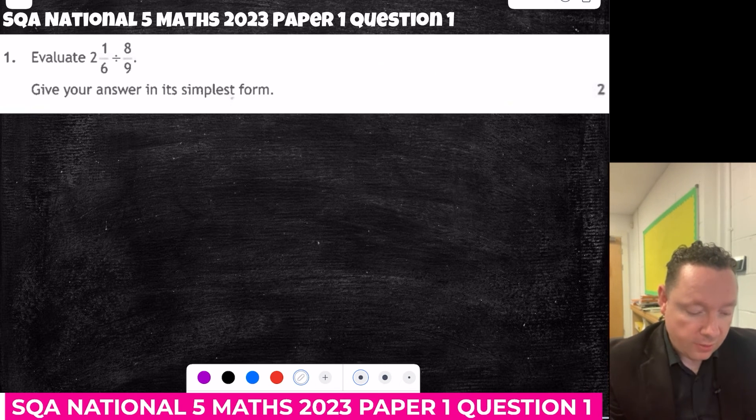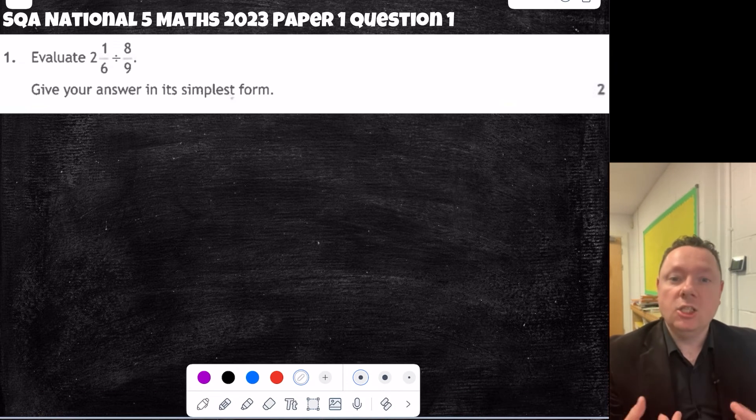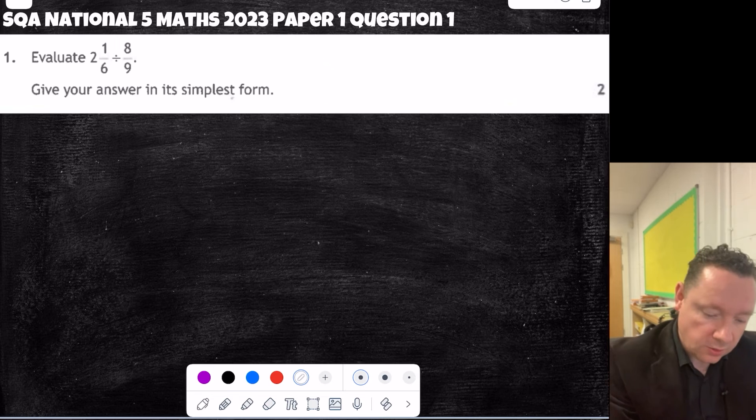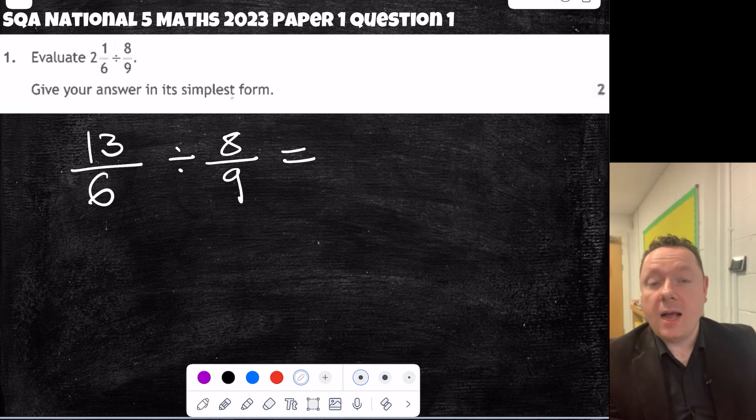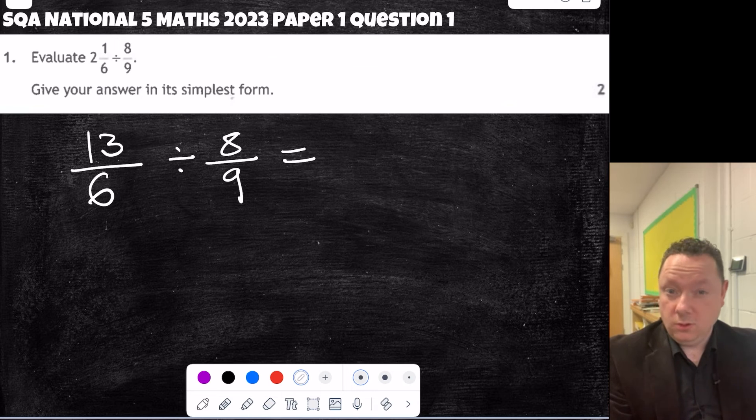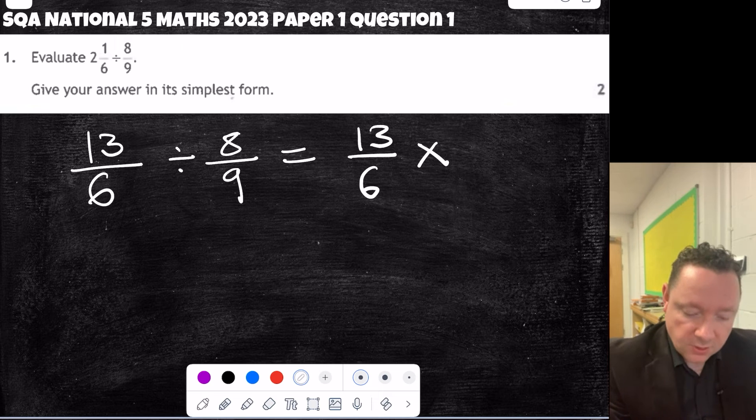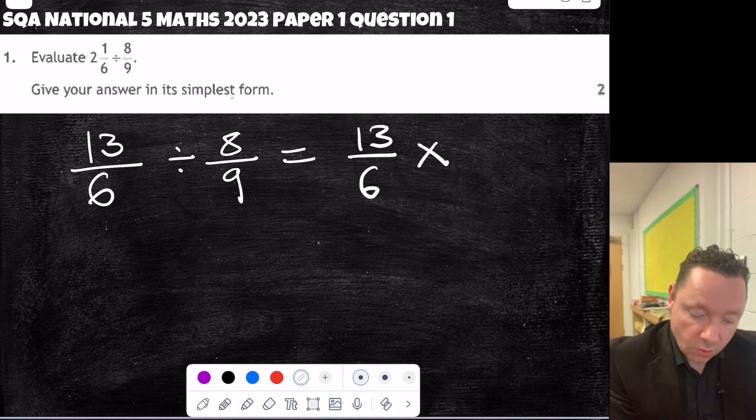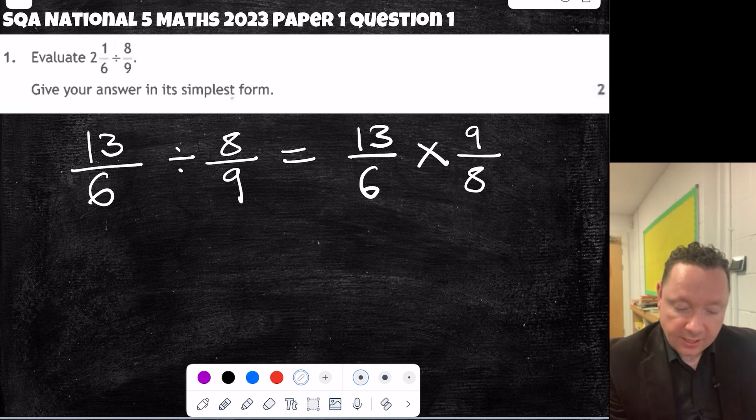It's going to be National 5 Maths 2023, paper 1, question 1. Evaluate 2 and a sixth divided by 8 ninths. So I'm dividing fractions, so I've got mixed numbers, change to improper fractions. So 2 and 1 sixth, 2 times 6 is 12, plus 1 is 13. So I get 13 over 6, divided by 8 over 9. Divide by a fraction is the same as times by its reciprocal. To be very clear with that, that means you do 13 over 6. Divide becomes times and the second fraction you can flip upside down, essentially, so it becomes 9 over 8. Again, now, once you get to the times, you can now simplify in advance by the 9 and the 6, or you can just do the times and then simplify later. I'll just do the times and simplify later.